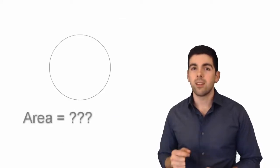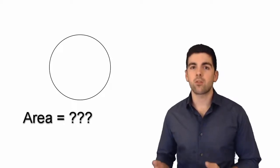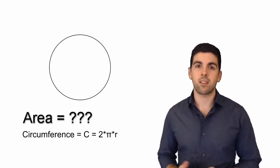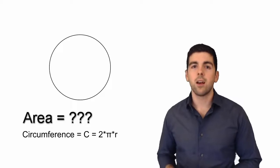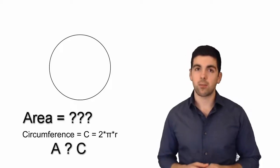Euclid wanted to figure out the area of a circle. Up to this point the circumference was known to be proportional to the radius, and that proportionality constant is as we know today, pi, 3.1415 etc. But Euclid wanted to know the relationship between the area and the circumference.